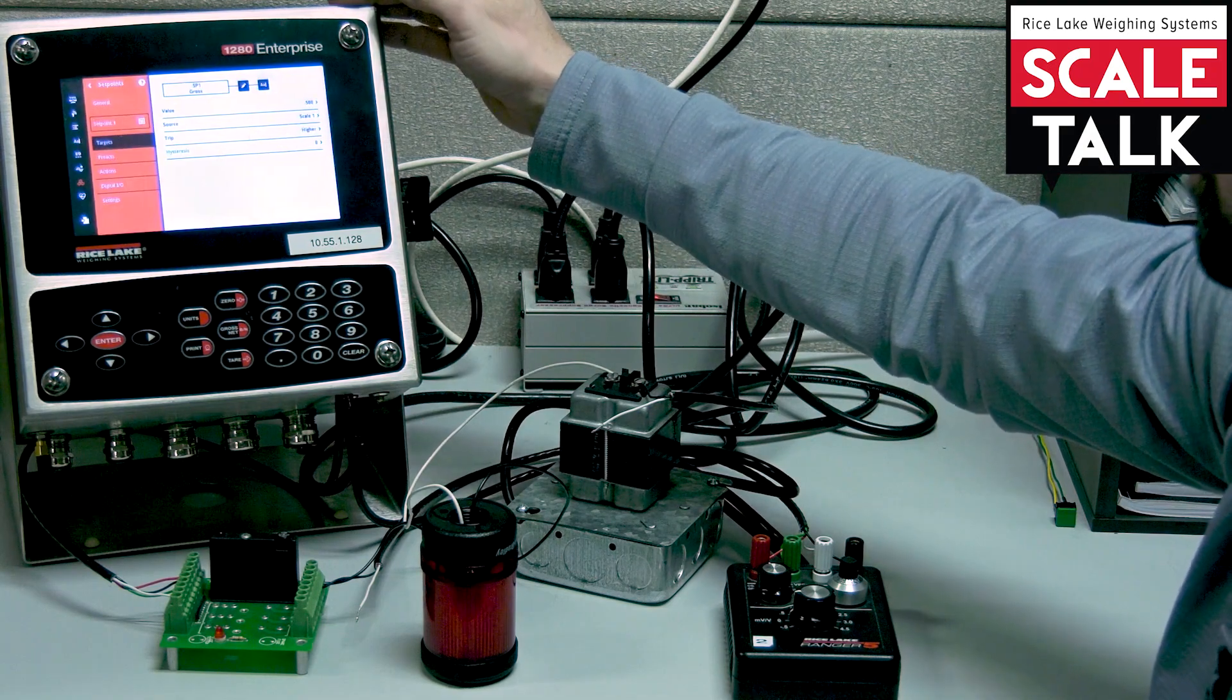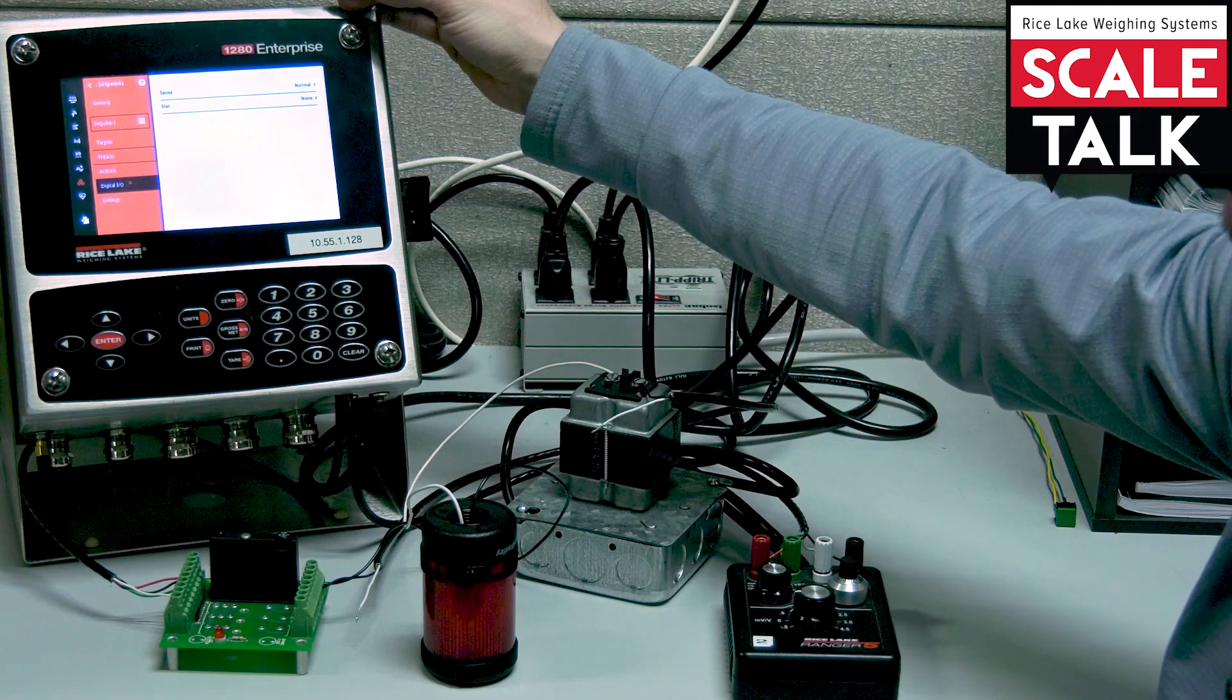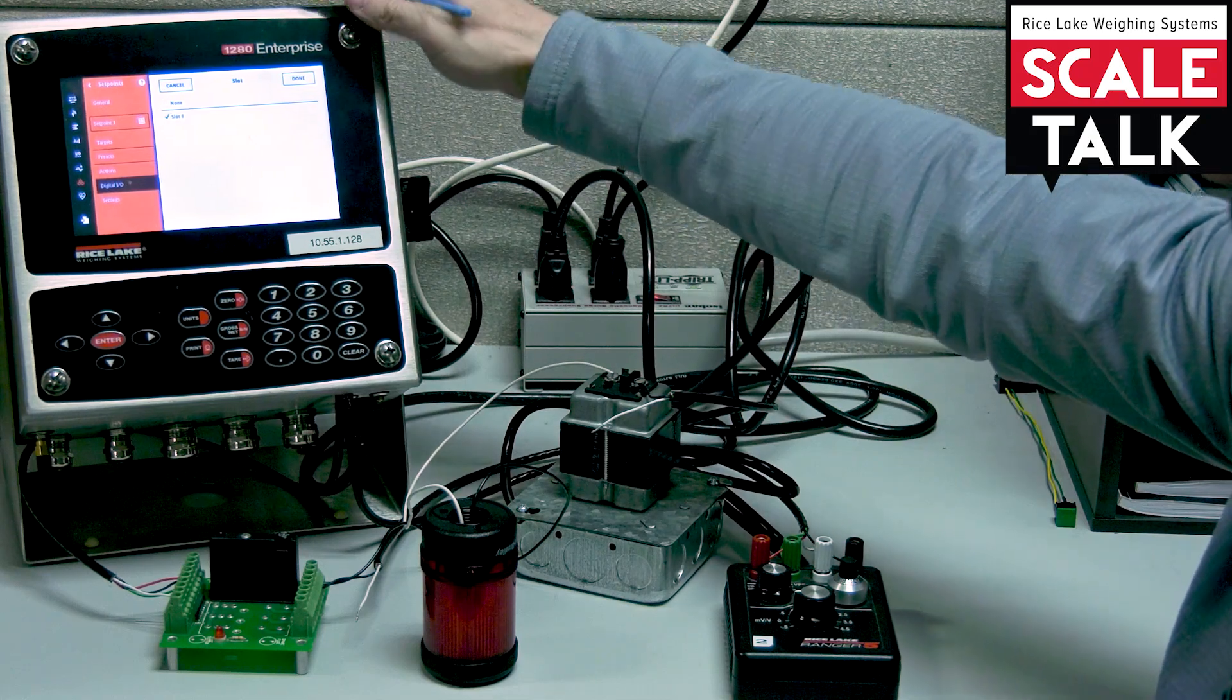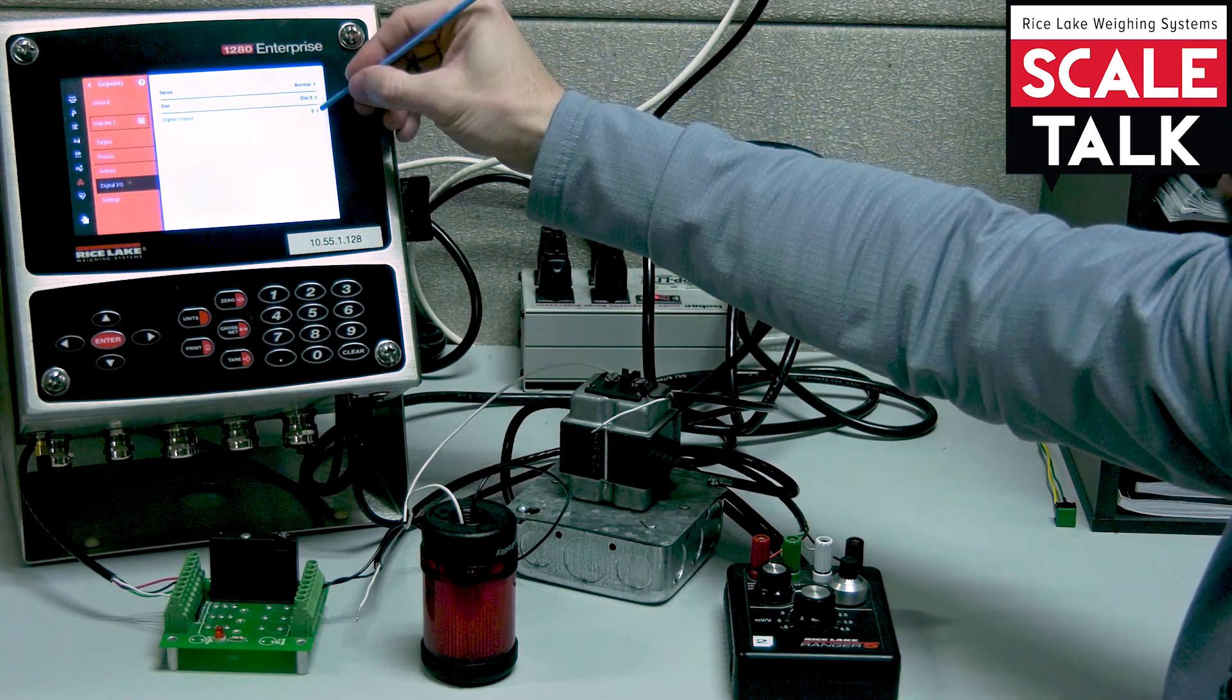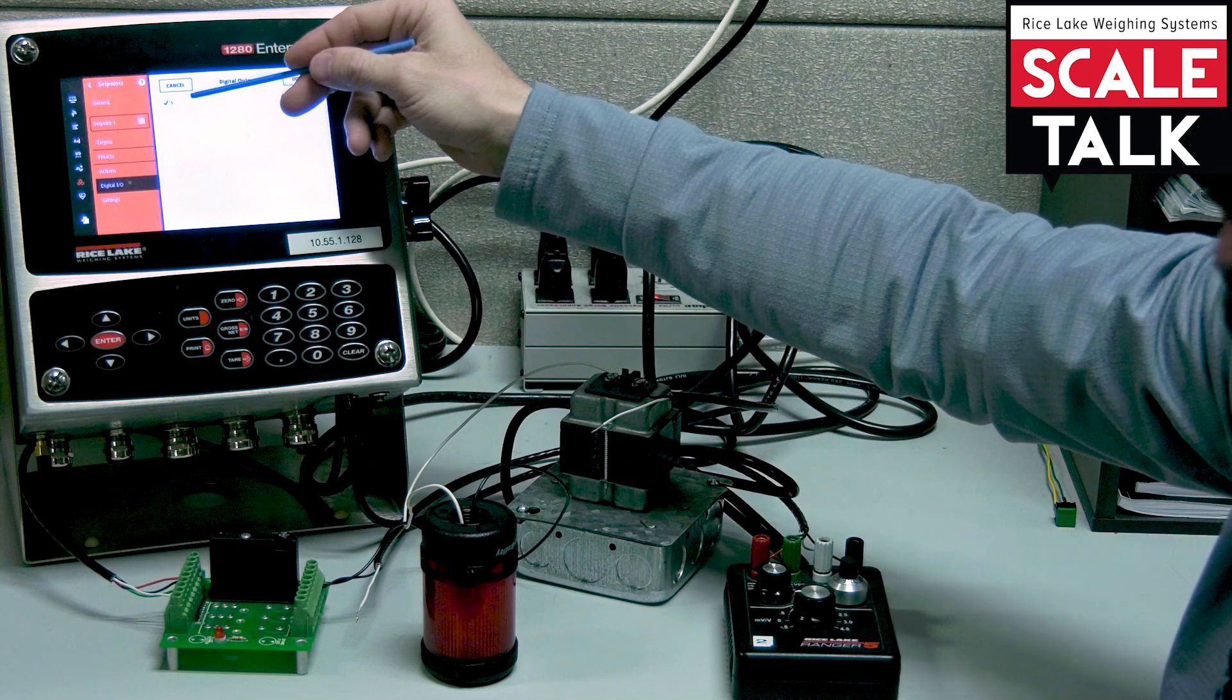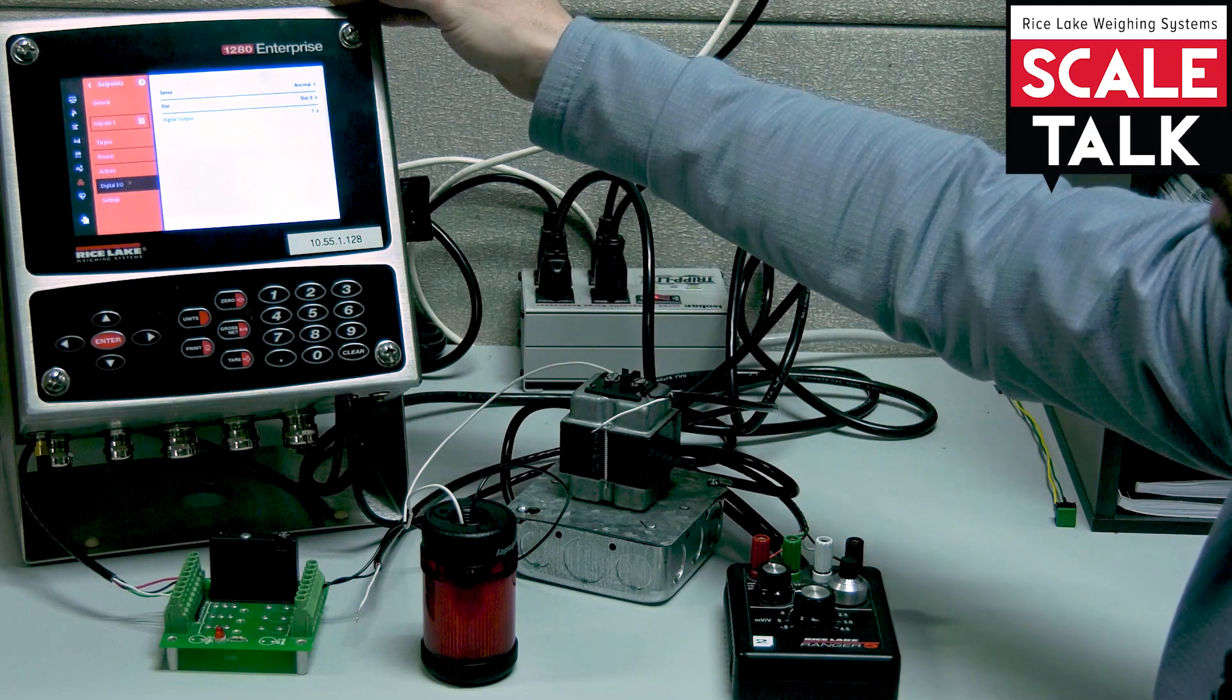Then under my digital I.O., I need to tell it which digital I.O. is going to be affected once we reach that set point. So I'm going to choose my slot zero, which is the native I.O.s to the CPU board. That's where I have that wired up. I'm going to select output number one. You see that that's available now. None of the others are available. Only ones we're going to see are the ones we've pre-configured. So again that's why we had to indicate that first.